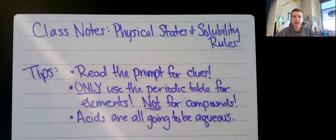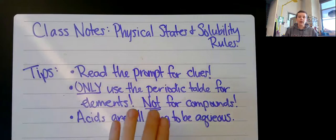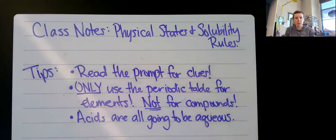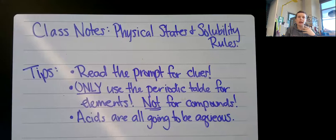First off, I just want to have some tips. You don't necessarily need to write them, but just some things that I think you definitely should be aware of. Every time you're given a prompt - like if I tell you to translate a sentence into a chemical equation - sometimes that prompt has clues. Like it will say 'salt that has been dissolved,' which should signal to you in your brain that it is aqueous. So read the prompt. Sometimes the physical states are literally given to you and you don't have to worry about figuring them out.